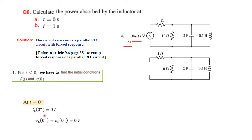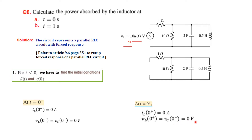This is at t less than 0. Now let's find out what happens immediately after t greater than 0 — the moment this voltage is switched on. We know that the inductor current cannot change instantaneously, and the capacitor voltage cannot change instantaneously. So the moment after it is switched on and the voltage becomes 10 volts, the current will remain 0 and the voltage across the capacitor will also remain 0.